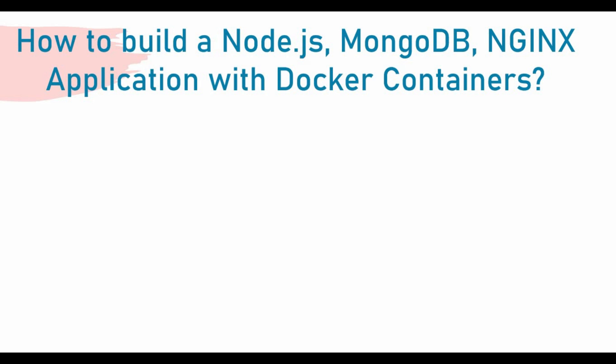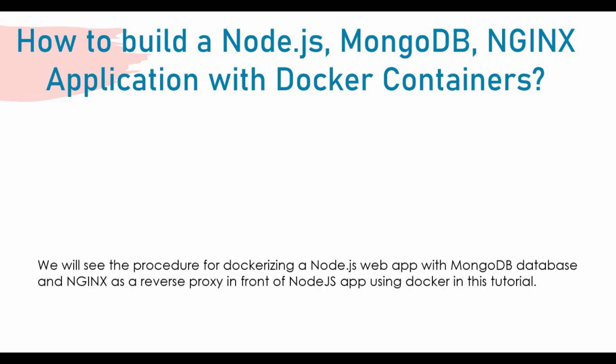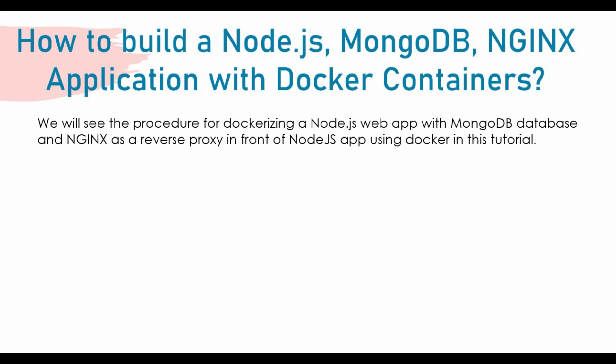If you have seen my previous tutorial, we did a Node.js app with NGINX reverse proxy as a frontend but not with MongoDB as a database. There have been a lot of requests on how to do this setup in the case where there is a MongoDB database. So in this video we will see the complete procedure for dockerizing this Node.js web app which has a MongoDB database, with NGINX as a reverse proxy in front of the Node.js app.